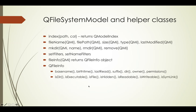You can also use QFileInfo to check whether an item is a directory, whether it's an executable file, whether it's an actual file, whether it's hidden, readable, writable, or whether it's a symlink — a reference to a file rather than the actual file itself. These methods all return true or false, so you can get a lot of boolean information about a file using the QFileInfo class.